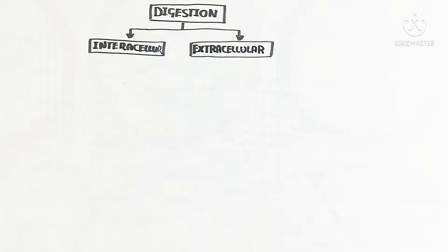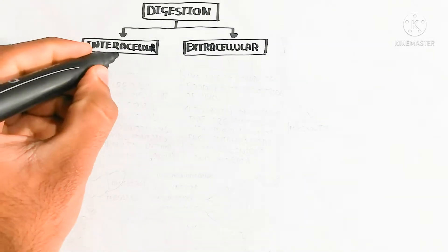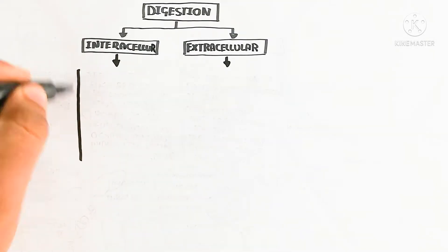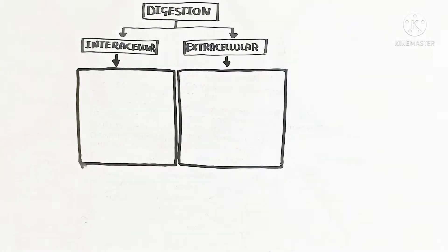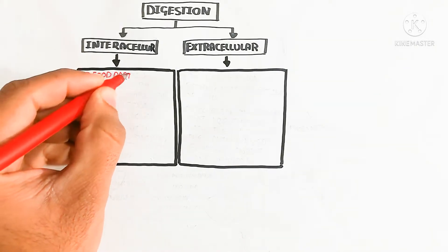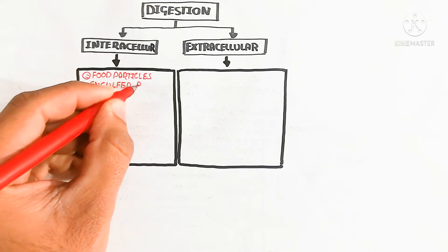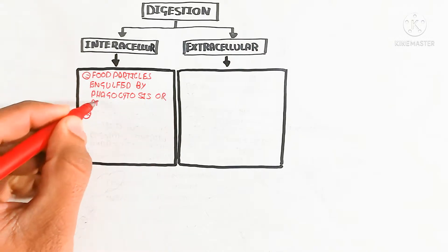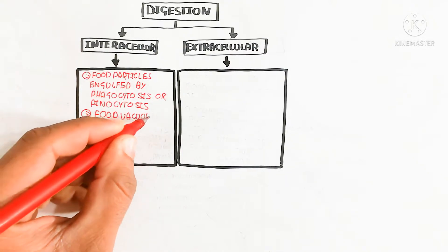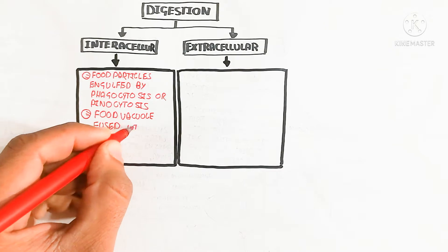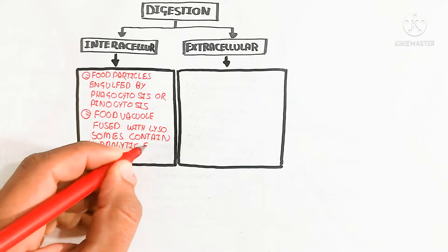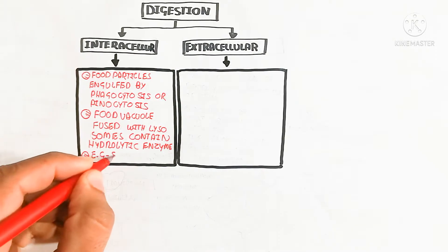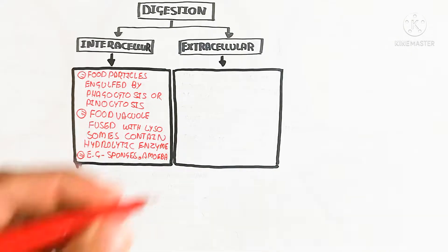Intracellular digestion involves food particles engulfed by phagocytosis — which handles solid particles — or pinocytosis, which handles liquid particles. The food vacuole then fuses with lysosomes. Lysosomes are very important for intracellular digestion and contain hydrolytic enzymes. Examples of organisms that use intracellular digestion are sponges and amoeba.